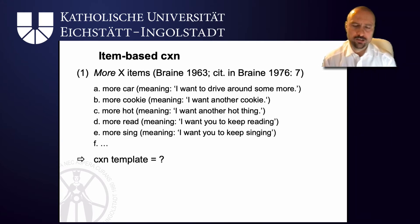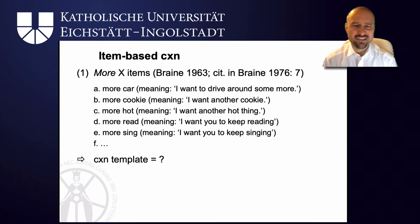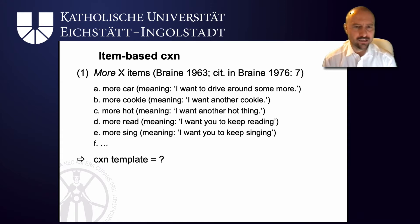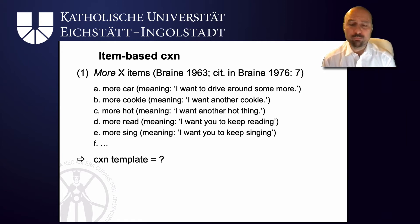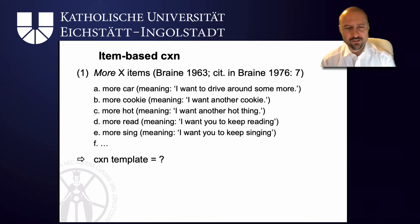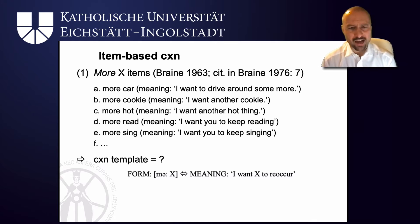Let's look at some specific item-based constructions to illustrate this. Brown, already in the 1960s, noticed that children say things like 'more car,' 'more cookie,' 'more hot,' 'more read,' 'more sing.' The child holds 'more' constant — it's an item that's fixed — but then there is a slot for car, cookie, hot, read, and sing. These constructions allow the child to express meanings like 'I want to drive around some more,' 'I want another cookie,' 'I want another hot thing,' and so on. Note that these are of course input-based — 'more x' is a construction that children will hear. But it's not just parrot-like behaviorist copying of what the parents say — they will probably not have heard their parents say 'more car.'